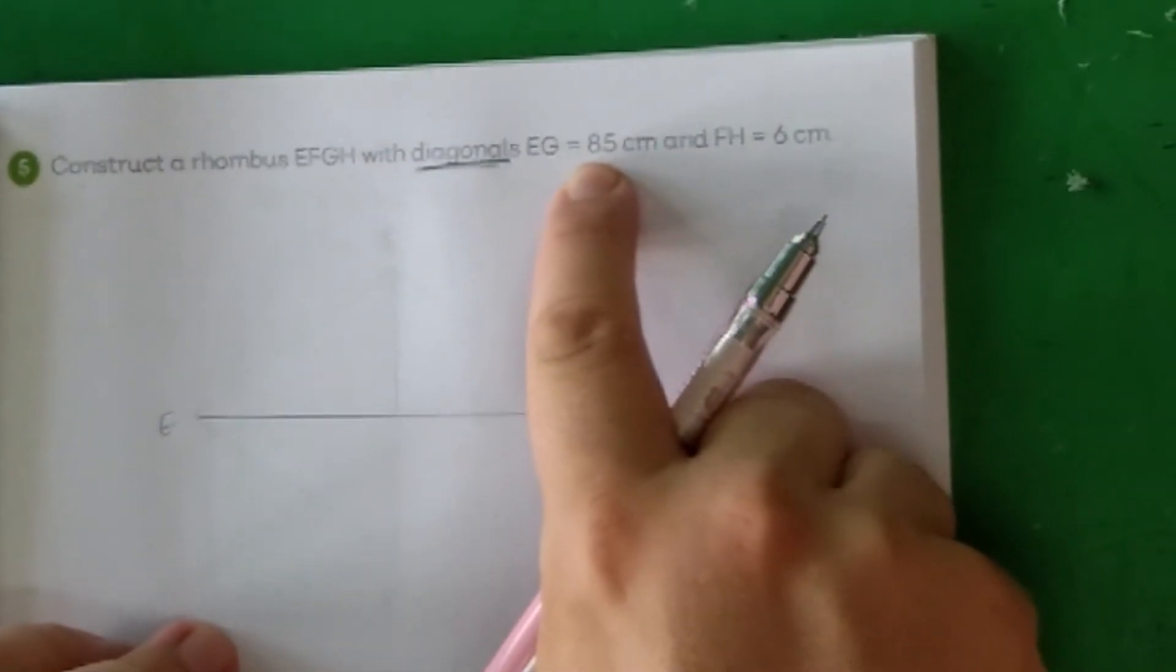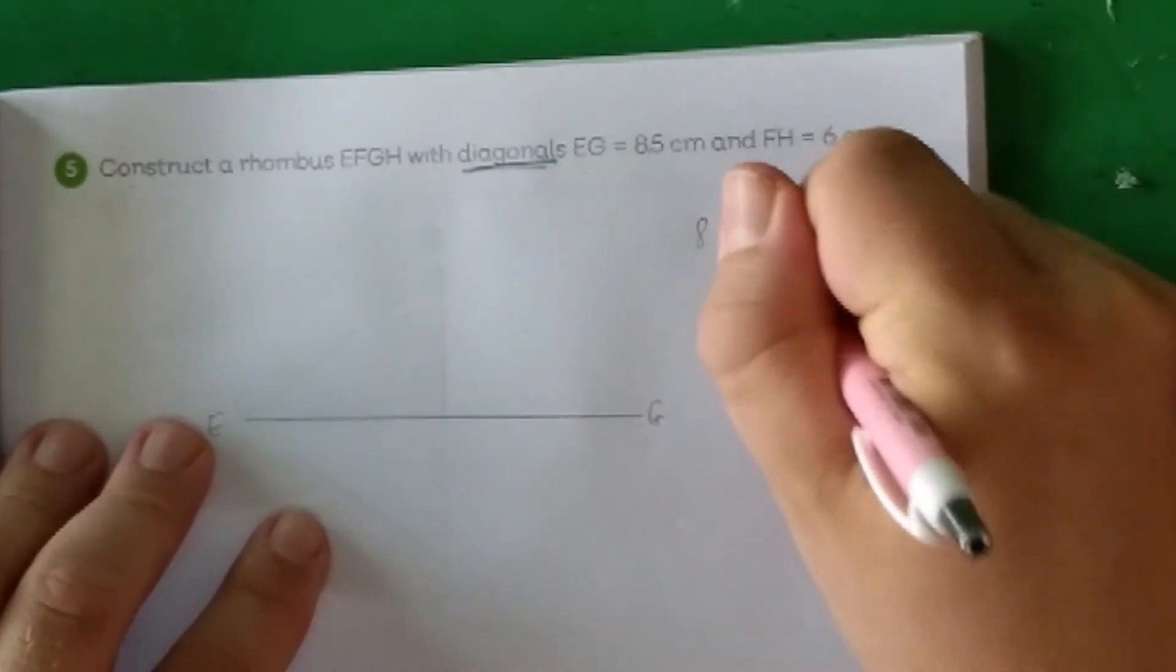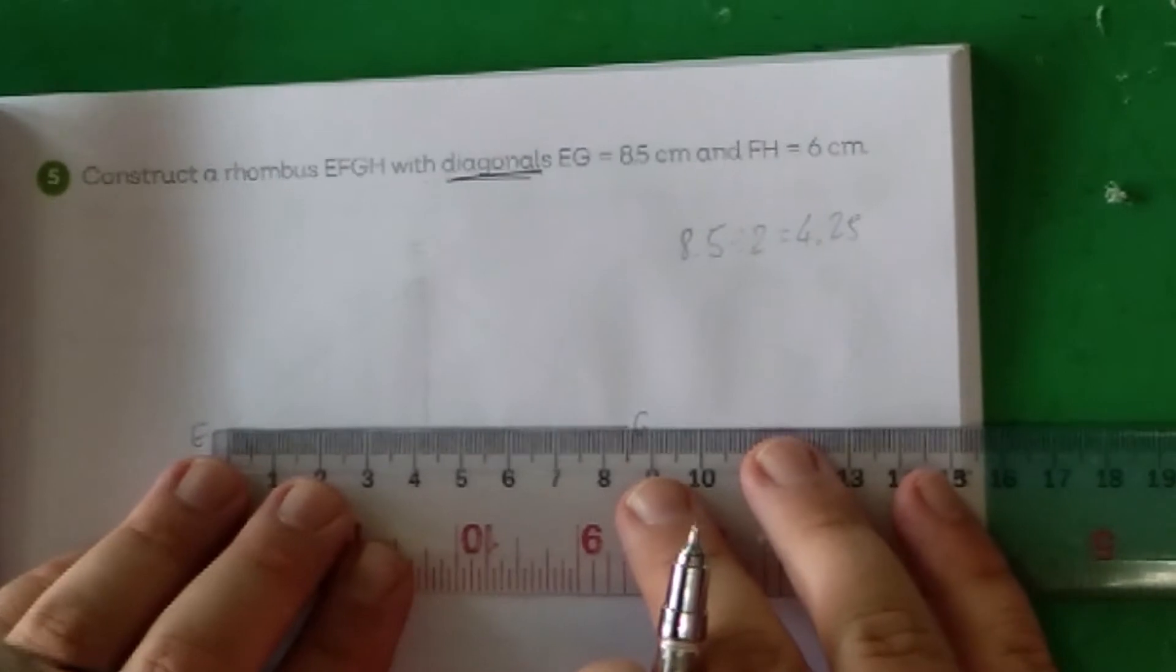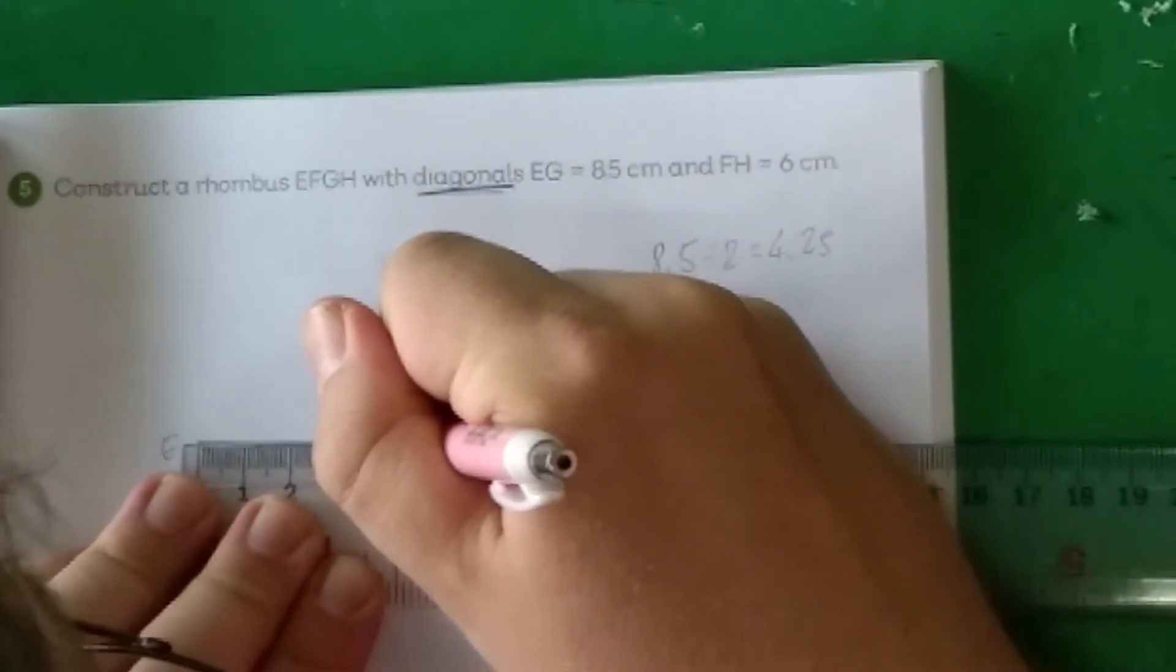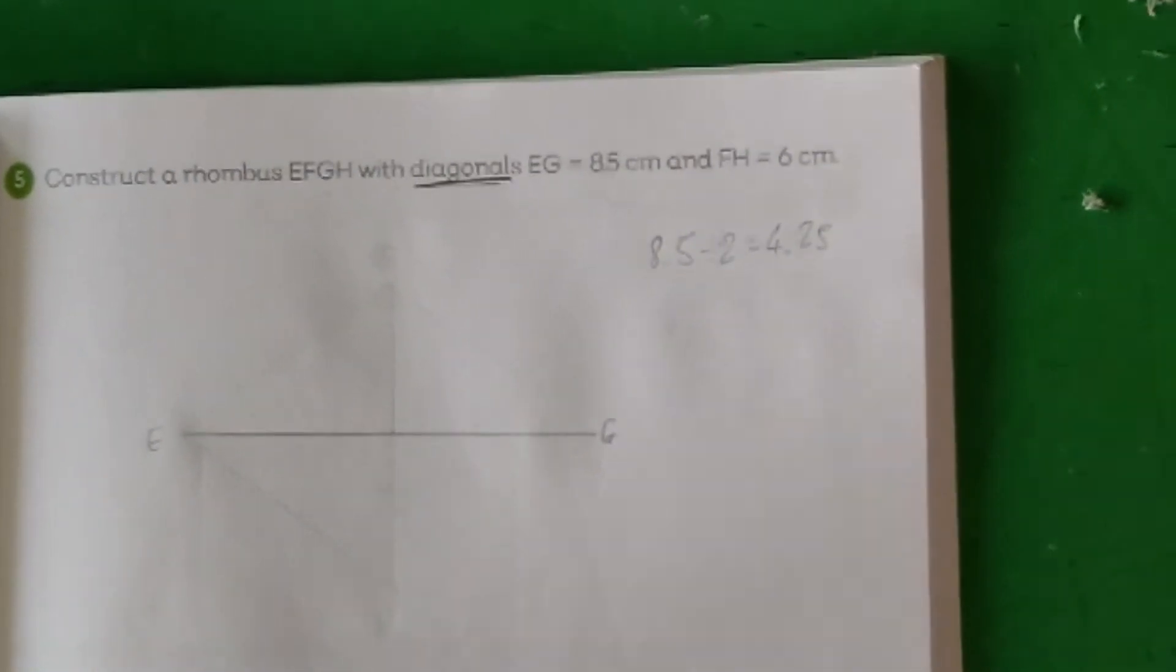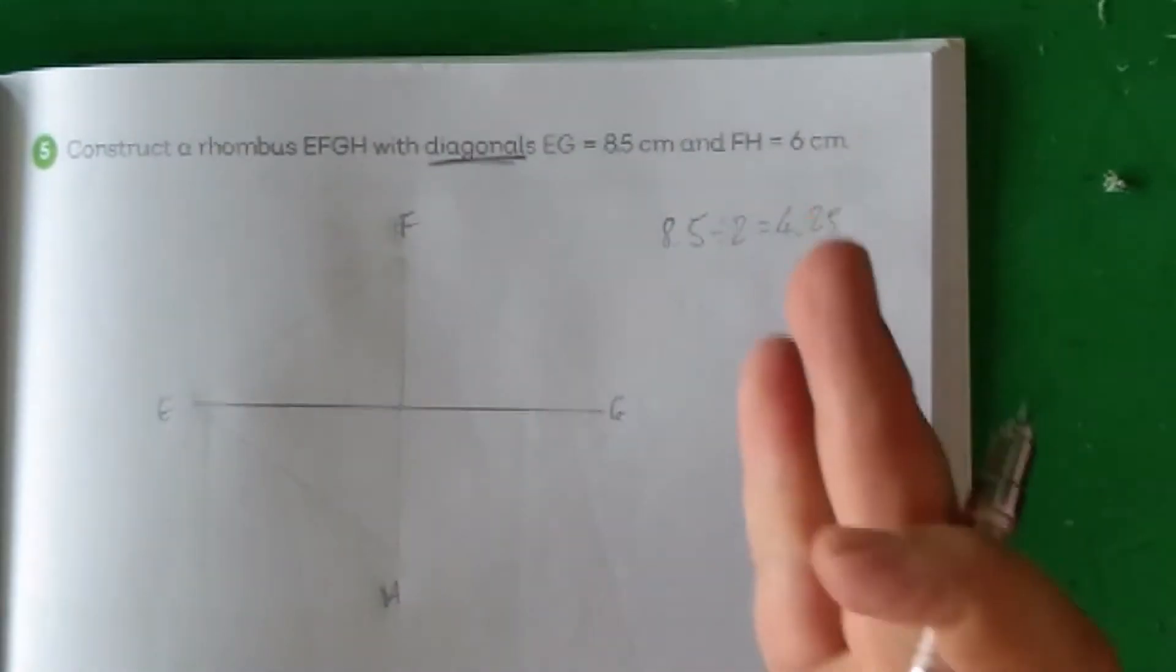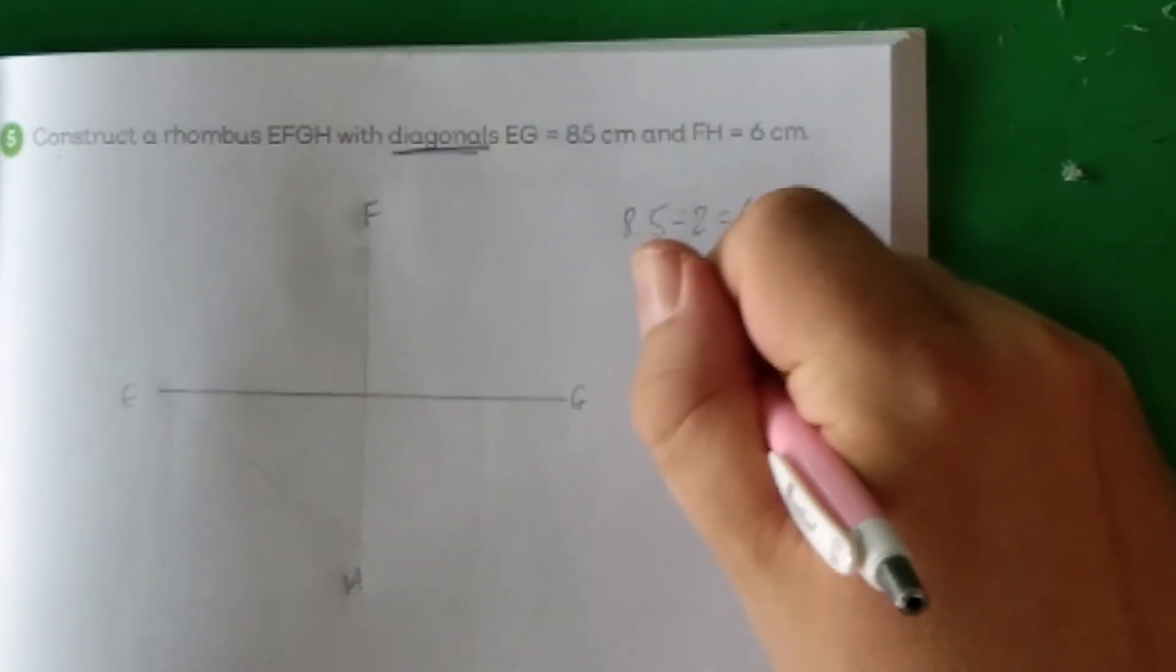What's the halfway point between E and G? It's going to be half of 8.5, so 8.5 over 2 is going to be 4.25. We're going to try and measure 4.25 as our midpoint here. Halfway between point 2 and point 3. Then, similarly, F is going to be up here, H is going to be down here. F and H has to fall halfway between E and G, but also, it has to cross halfway between F and H. What's half of 6 centimeters? That's going to give us 3 centimeters.